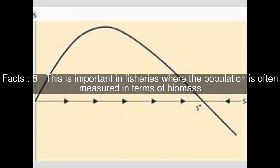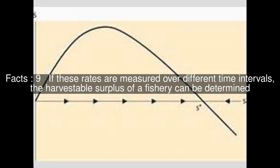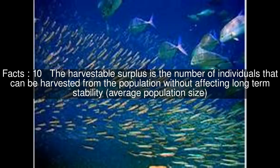This is important in fisheries where the population is often measured in terms of biomass. If these rates are measured over different time intervals, the harvestable surplus of a fishery can be determined. The harvestable surplus is the number of individuals that can be harvested from the population without affecting long-term stability or average population size.